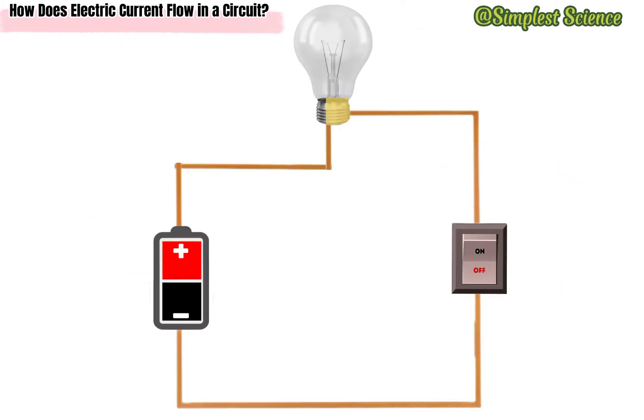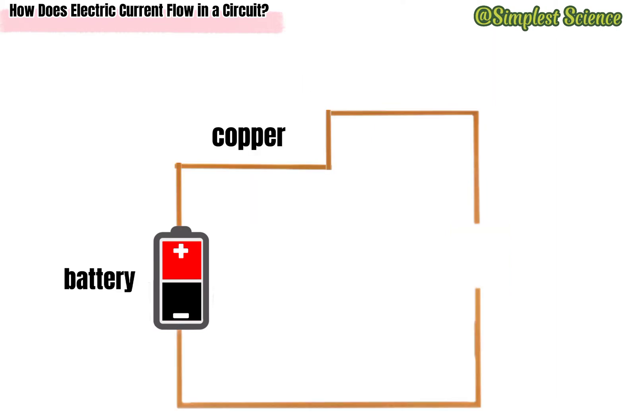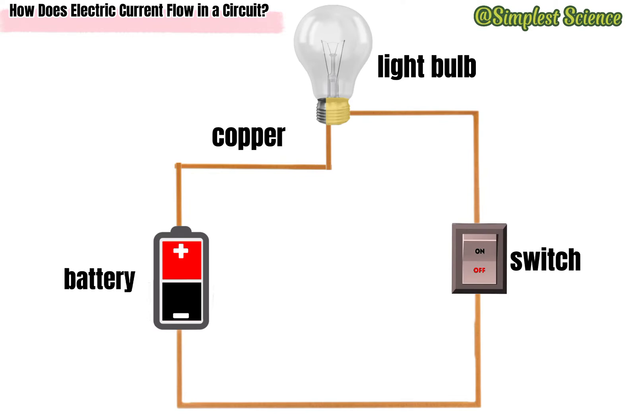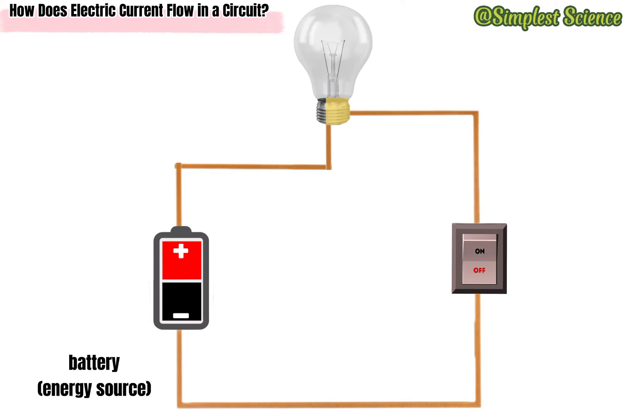In a simple electric circuit, these four vital components can consist of a battery, copper, a switch, and a light bulb. Each plays a significant role in producing electric current.